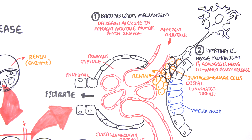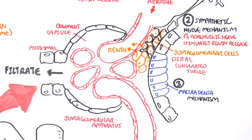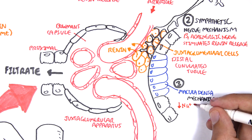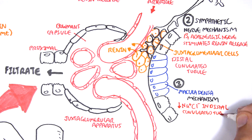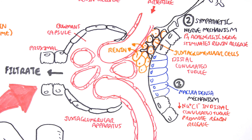The third mechanism, probably one of the most important, is the macula densa mechanism. Macula densa cells are chemoreceptors that detect how much sodium chloride is passing through the distal convoluted tubules. If there is a decrease in sodium chloride in the distal convoluted tubules, these macula densa cells will stimulate the juxtaglomerular cells to produce renin. Conversely, if there is an increase in sodium chloride, this will tell the juxtaglomerular cells to stop producing renin, similar to the baroreceptor mechanism.